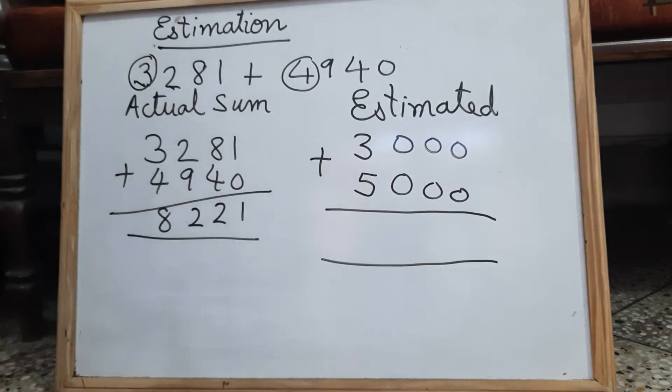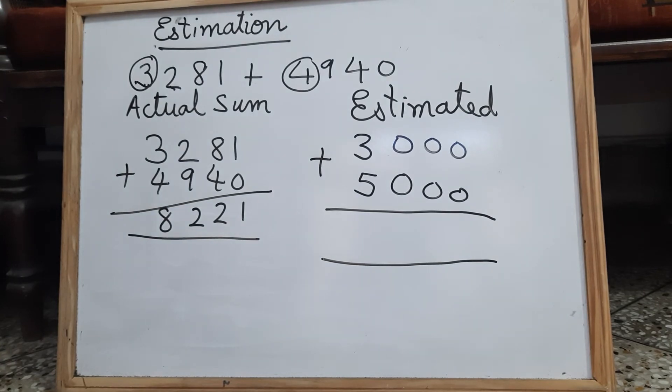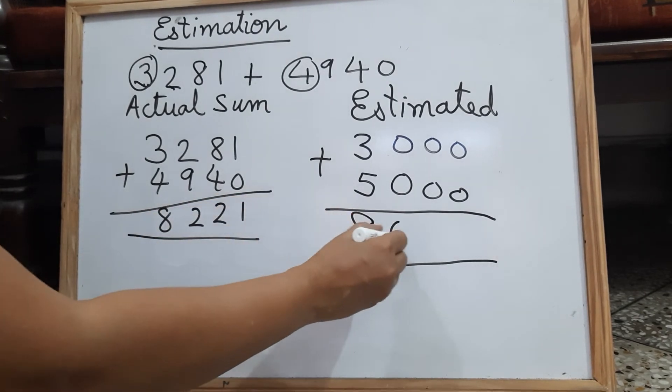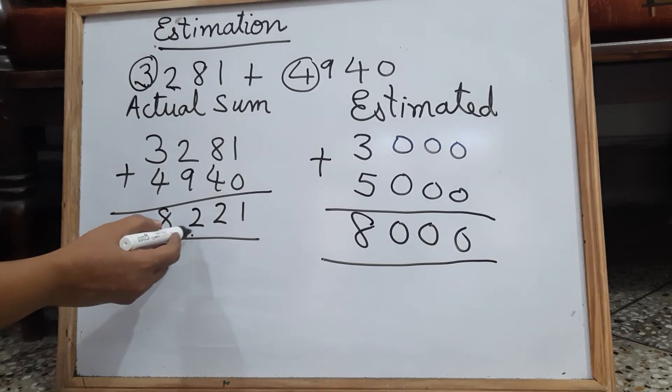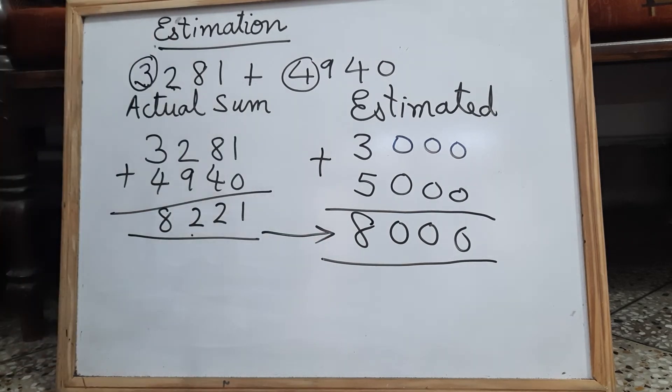Now you can find the sum. So it is 8,000. So the actual sum is 8,221 and the estimated sum is 8,000. Children, if you see the actual sum and estimate this also, you will get to the nearest 1,000, you will get 8,000.